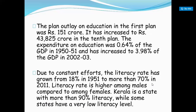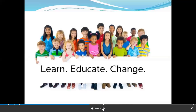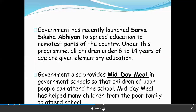Literacy rate is higher among males compared to females. Kerala is a state with more than 95% literacy rate, while some states have a very low literacy rate. The government has launched Sarva Shiksha Abhiyan — education for all. It is a significant step towards providing elementary education to all children in the age group of 6 to 14 years, a time-bound program of the central government in partnership with states, local bodies, and communities for universalization of elementary education.